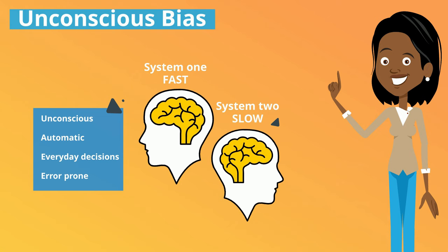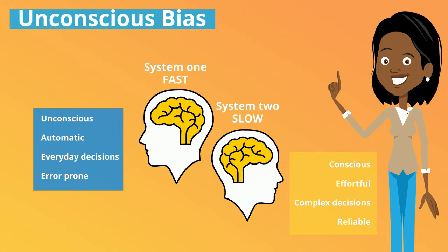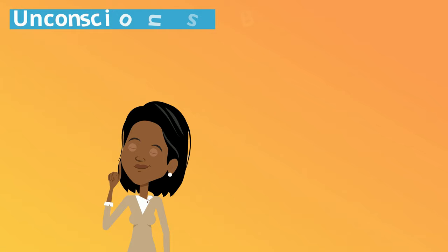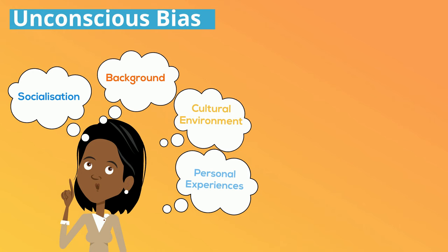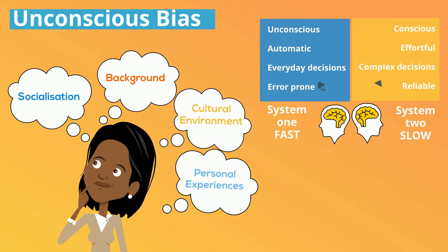Unconscious bias is implicit preference. It refers to a bias which we're unaware of and which happens outside of our control. It is a bias that happens automatically and is triggered by our brain making a quick judgement and assessment of people and situations. It is influenced by our socialisation, background, cultural environment and personal experiences. It may be responsible for negative assumptions and unwitting discrimination against people who may be considered different and do not share the same values, background and culture as ours.